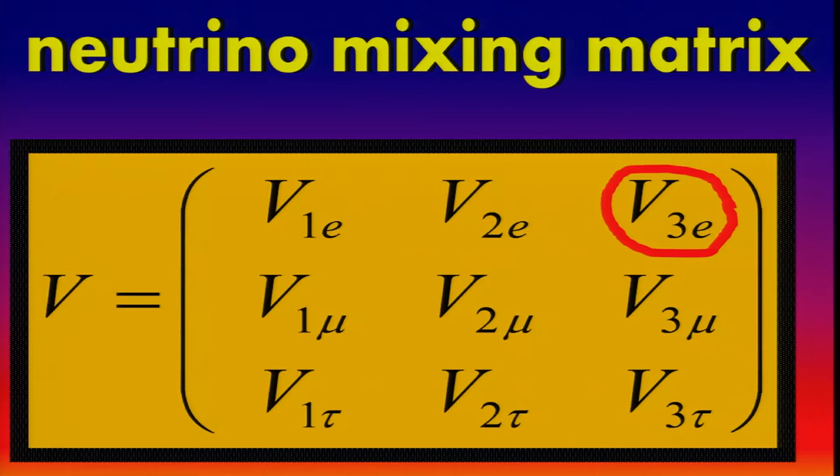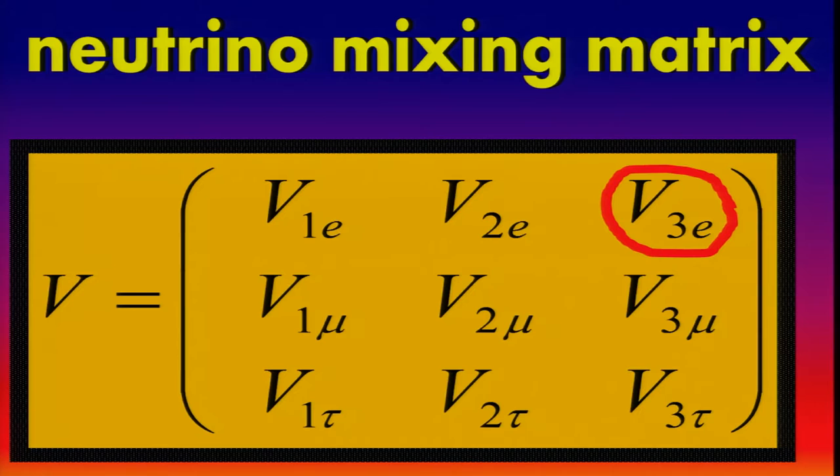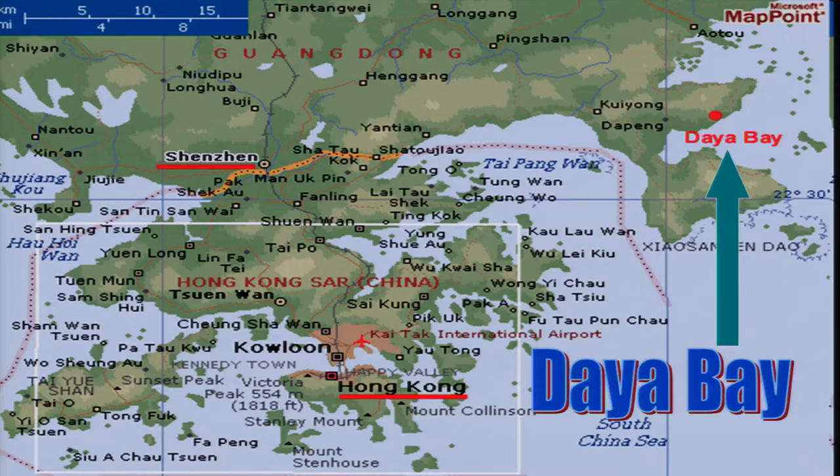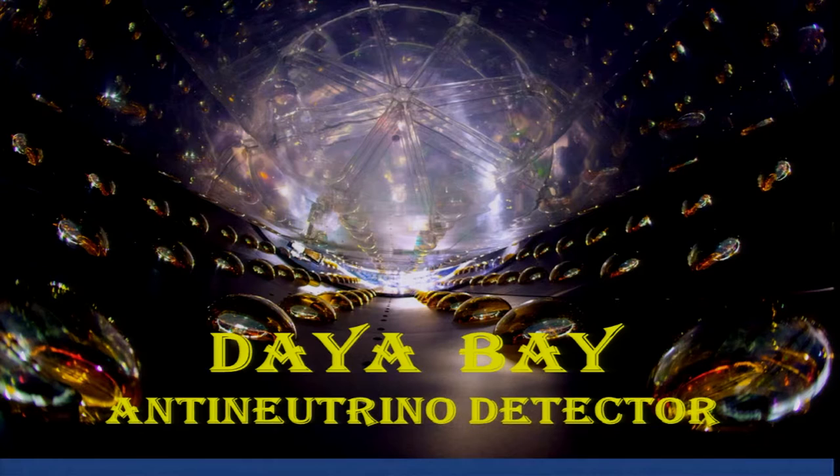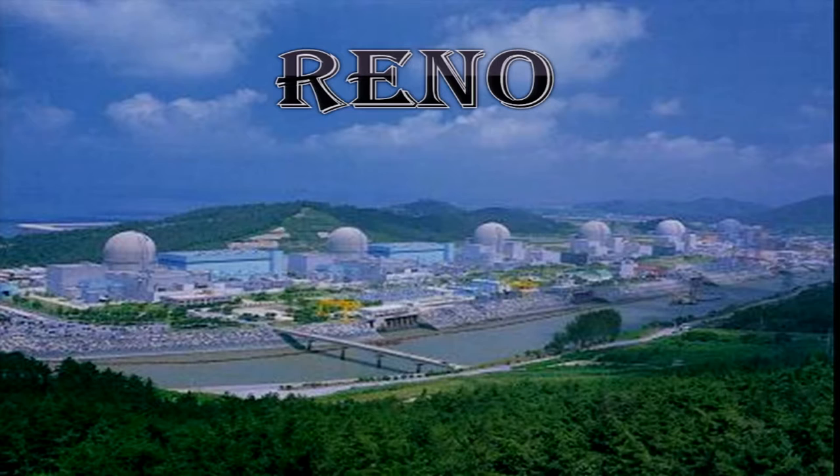Now, with the neutrino mixing matrix, there is also an element called V3E, which can only be measured by reactors. And it was measured finally, just recently, two years ago, by the Daya Bay detector in China. Here is Hong Kong, and up here is Daya Bay. In Daya Bay, there are four reactors. Two of them are here. The other two are further down. There are various detectors, in particular deep underground detector further in the mountains, about one kilometer away. This is the anti-neutrino detector at Daya Bay, which is under the mountains. The same experiment was also done with various reactors in Reno in South Korea.